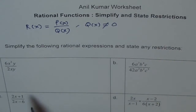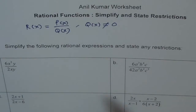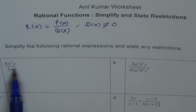So here we have some examples where we have given you some simple monomial ratios and some factored ratios, and we will try to understand how to simplify them and how to write their restrictions. Let's go through our examples. A: 6x² y divided by 2xy.